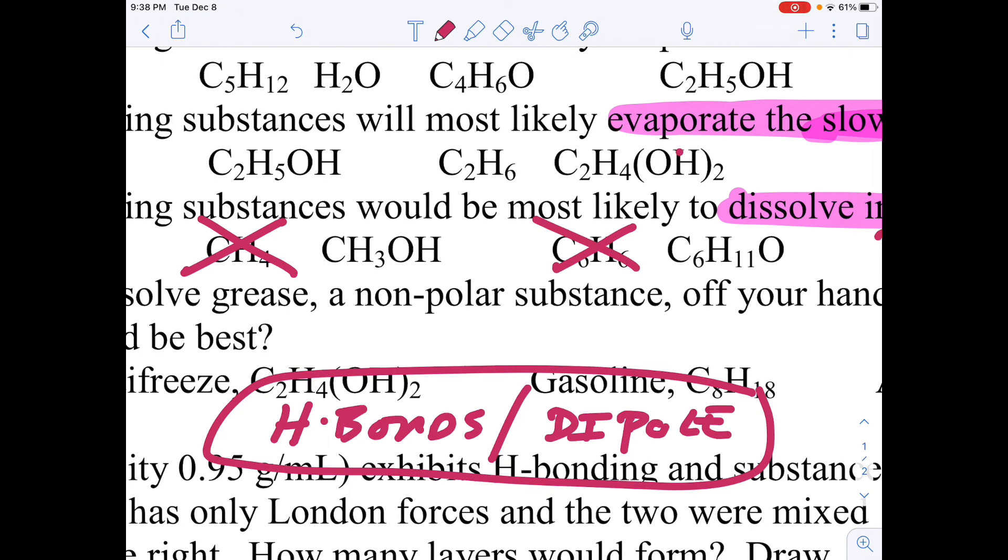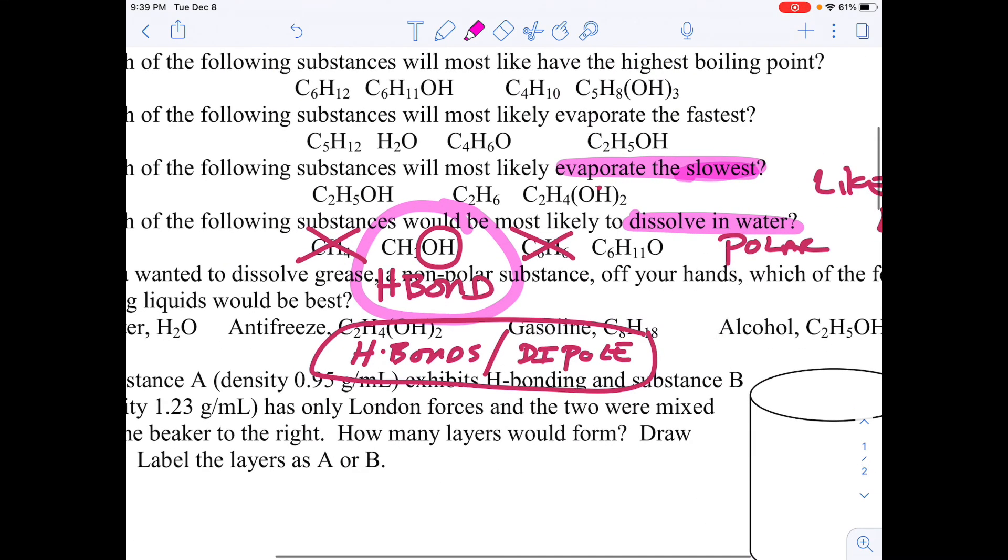That gives me two that have oxygens in there. This one is showing me a hydrogen bond. This one definitely does not have a hydrogen bond. It could be polar, but I would have to do some more work. This one, I know for a fact, will be polar. So this one will be most likely to dissolve.